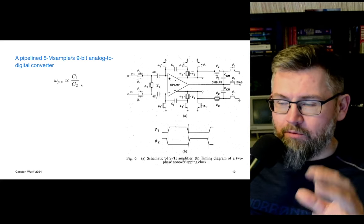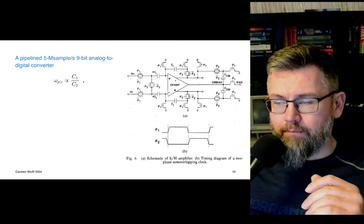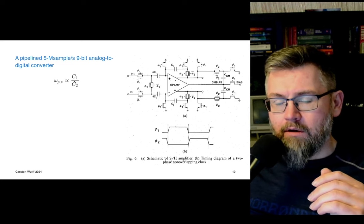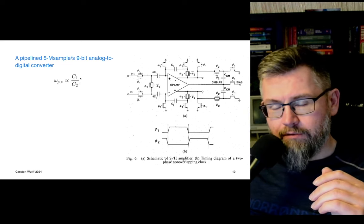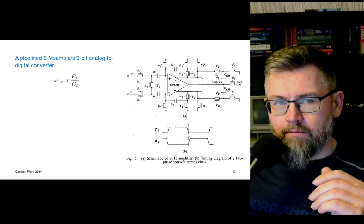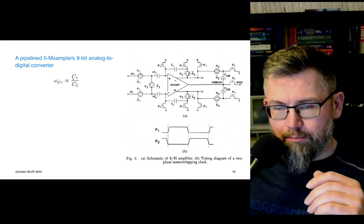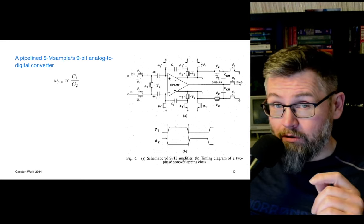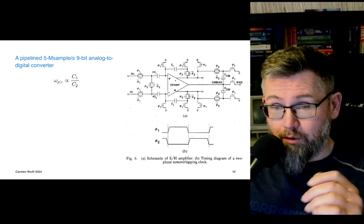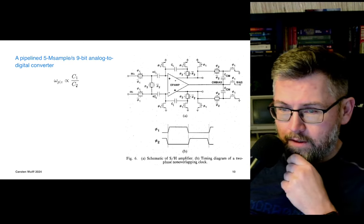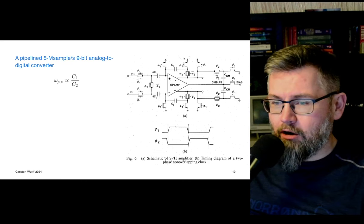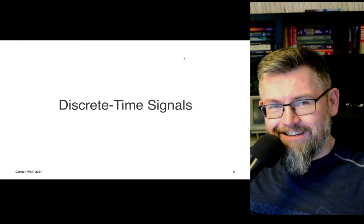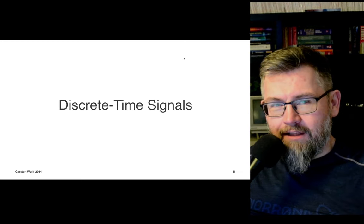We can also make filters with switch capacitor circuits, as we'll see later. The pole and zero frequencies are proportional to a ratio of capacitors, and that ratio can be made quite accurate on an integrated circuit — to about 0.1%. That's why switch capacitors are useful. But they use discrete time, and that needs an introduction.